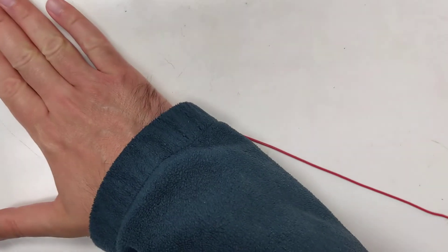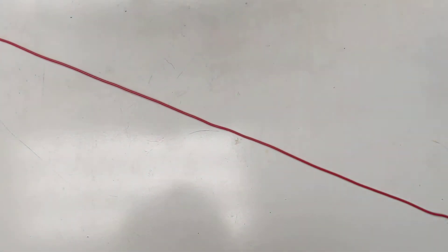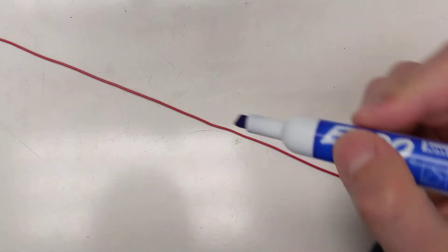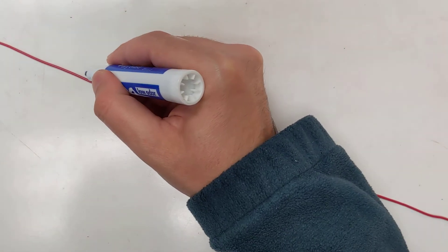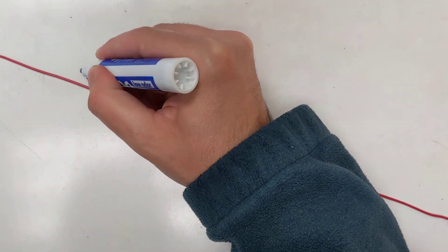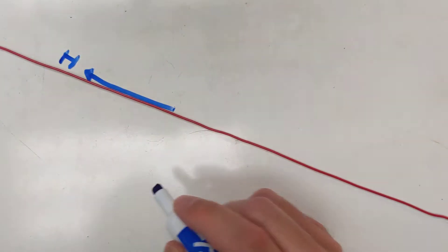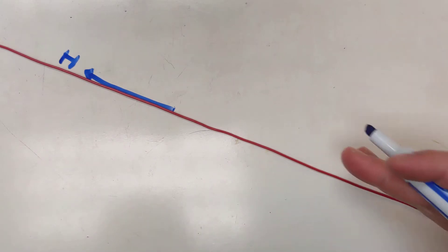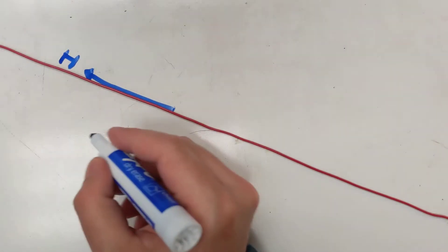I'm now letting it rest on the plane of my table. Let's say that I have a current flowing here and the current is flowing this way. The conventional current goes this way.